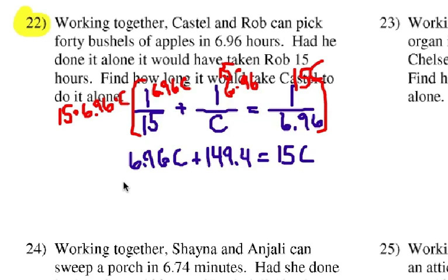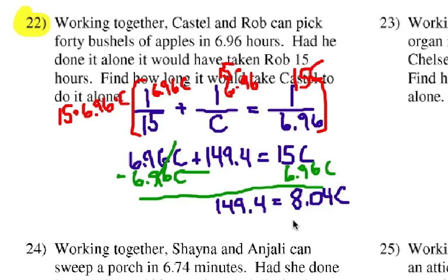We're going to subtract 6.96C from each side. And our next result. 149.4 equals 8.04C. Divide each side by 8.04. And you're going to get the number of hours that it could take Castell to do the work himself. 18.58 hours.